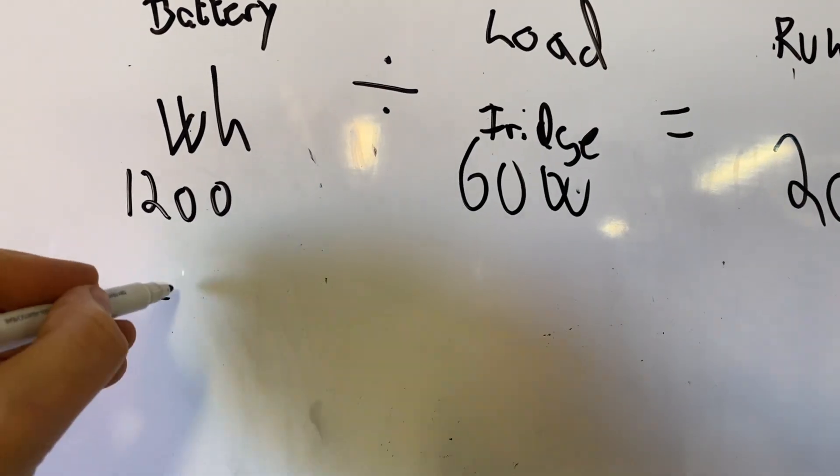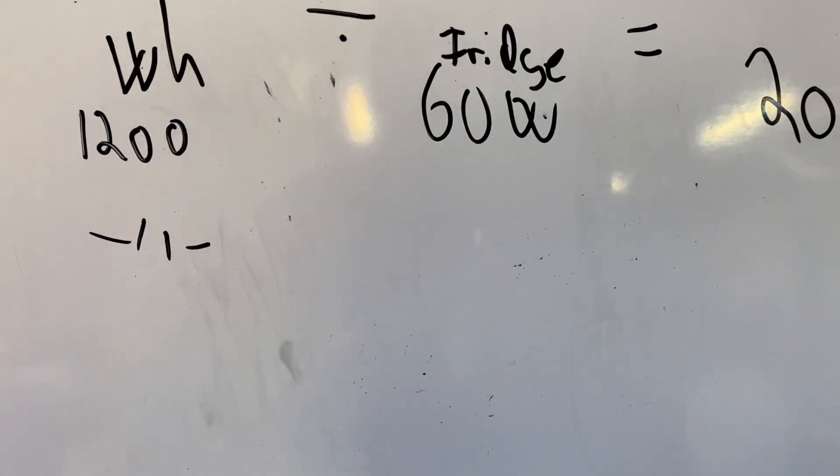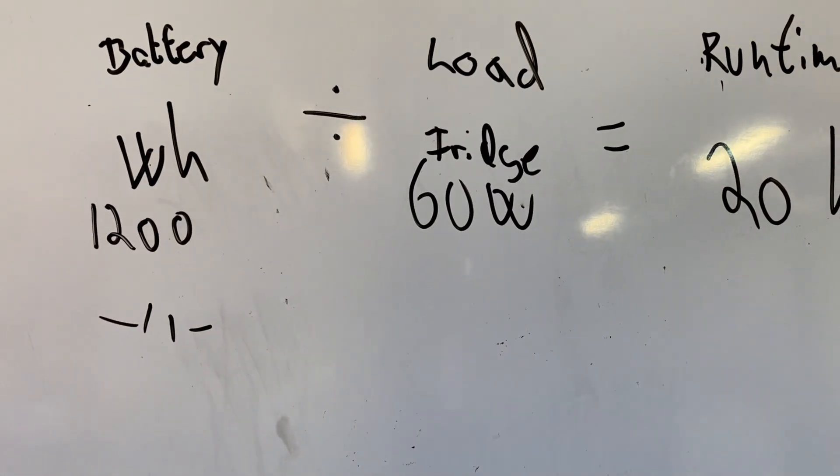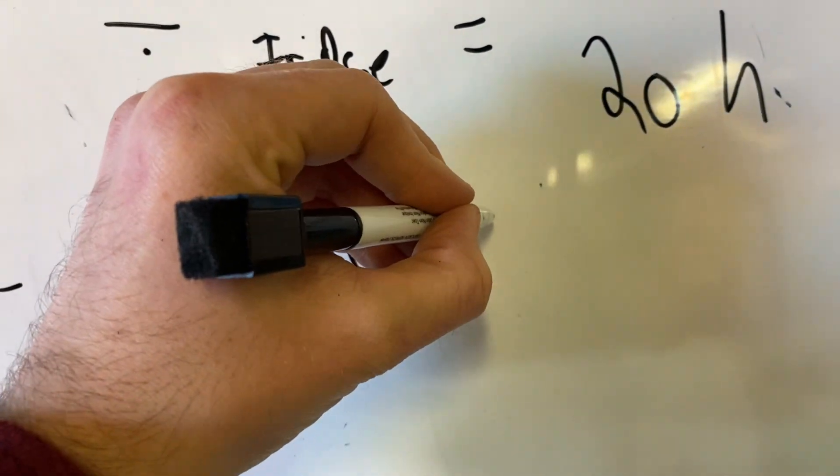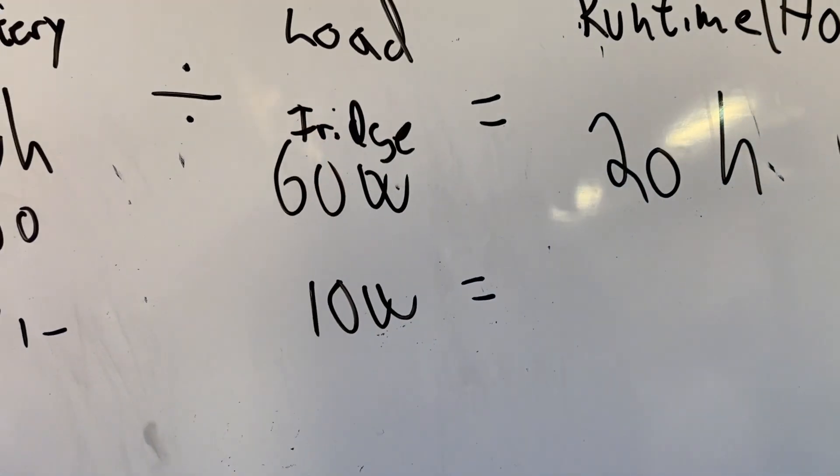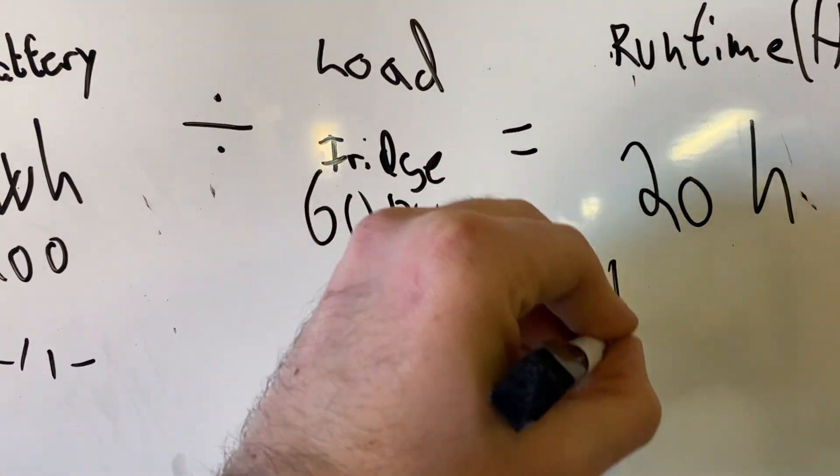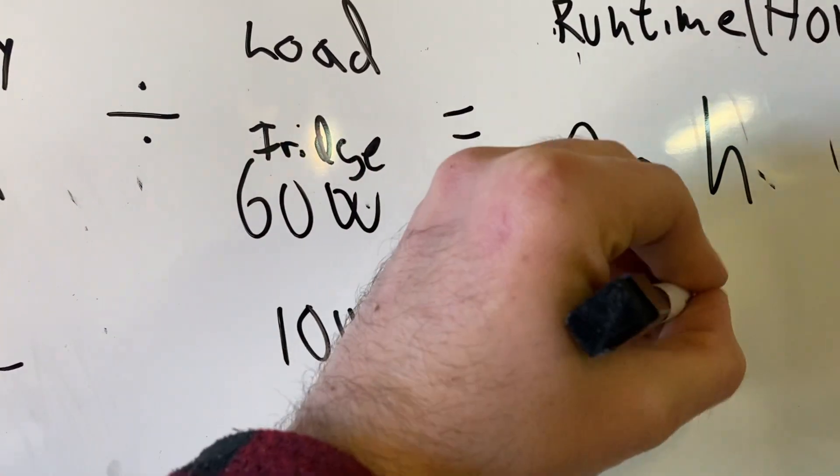Now, let's say you only got some LED lights that's 10 watts. You can run them for 120 hours.